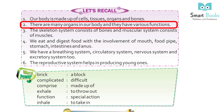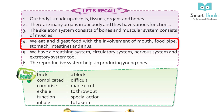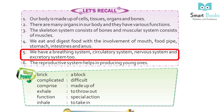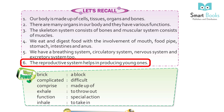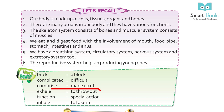Let's recall: 1. Our body is made up of cells, tissues, organs, and bones. 2. There are many organs in our body with various functions. 3. The skeletal system consists of bones and the muscular system consists of muscles. 4. We eat and digest food with the involvement of mouth, food pipe, stomach, and intestines. 5. We have a breathing system, circulatory system, nervous system, and excretory system. 6. The reproductive system helps in producing young ones. Word power: complicated – difficult; comprised – made up of; exhale – to throw out; function – special action; inhale – to take in.